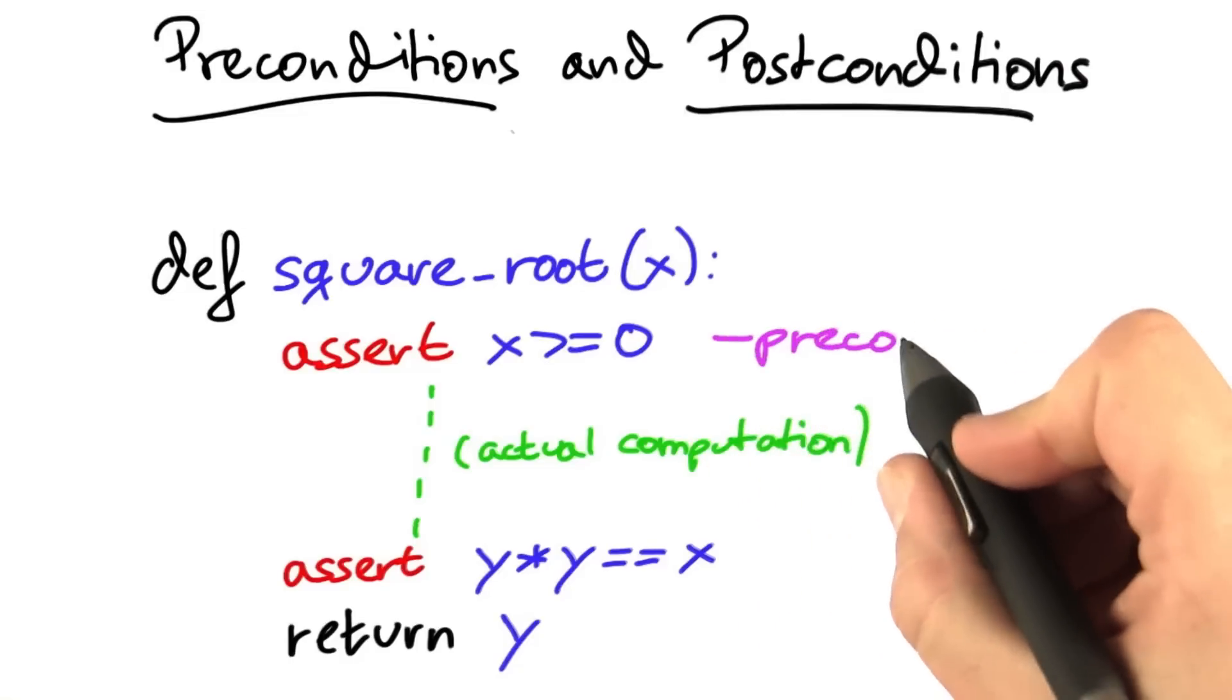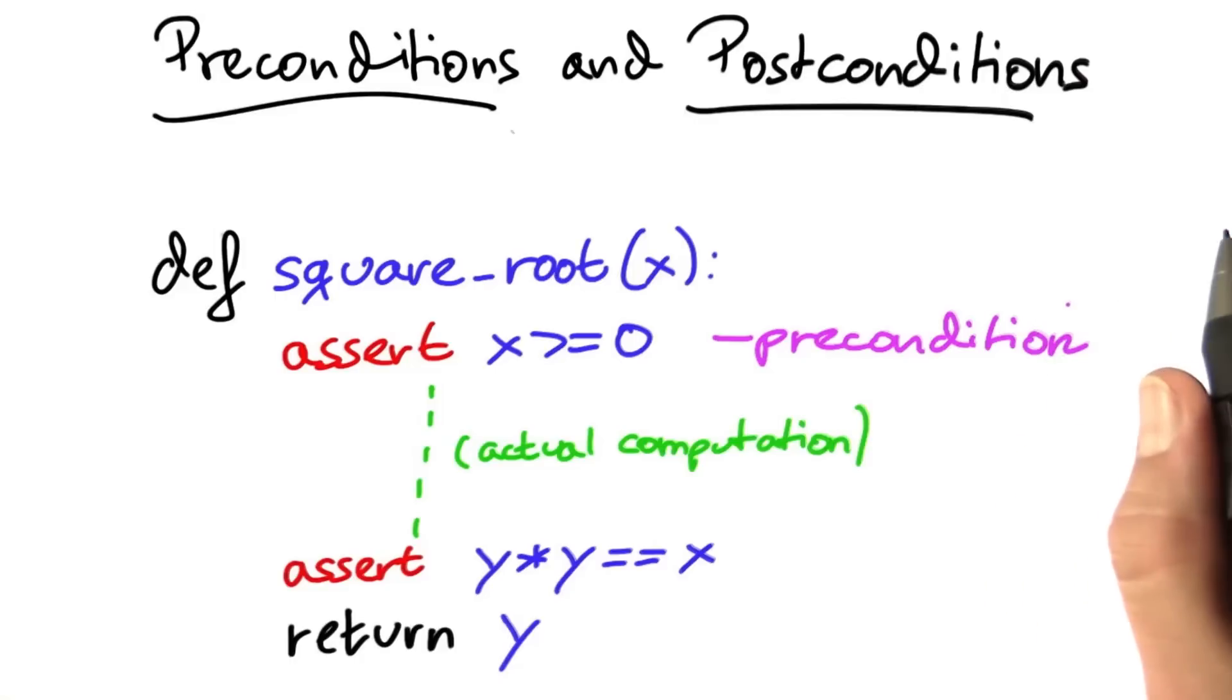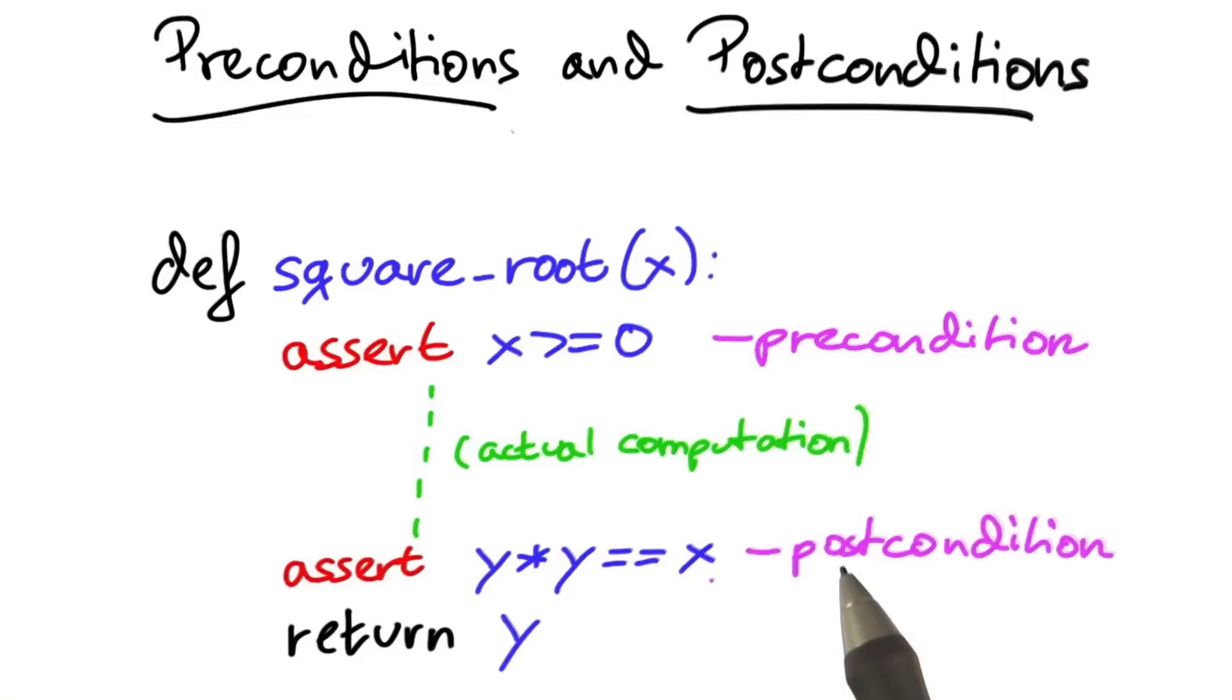An assertion that's being called at the beginning of a function, and which checks the properties of the arguments, is called a precondition. An assertion which checks the result of a computation before it's actually being returned is called a postcondition.